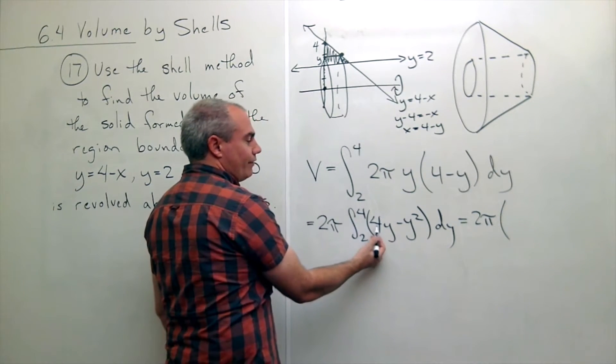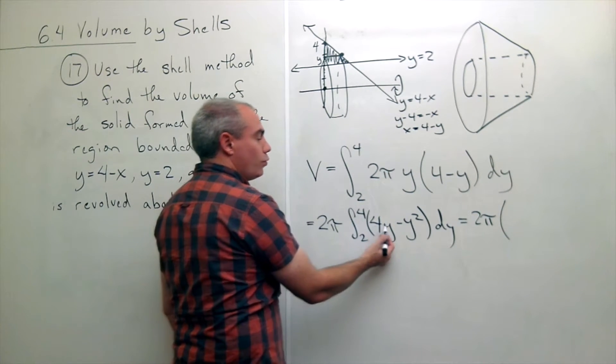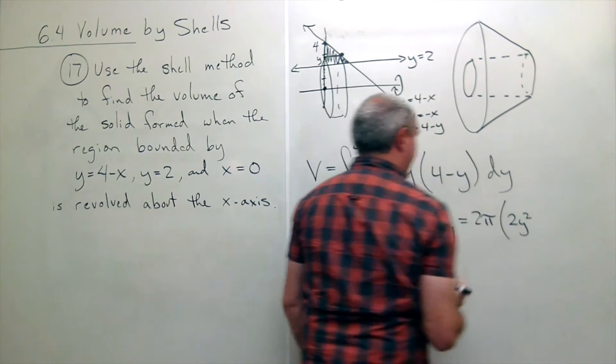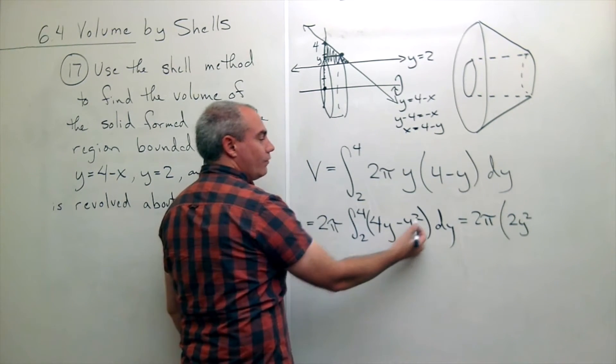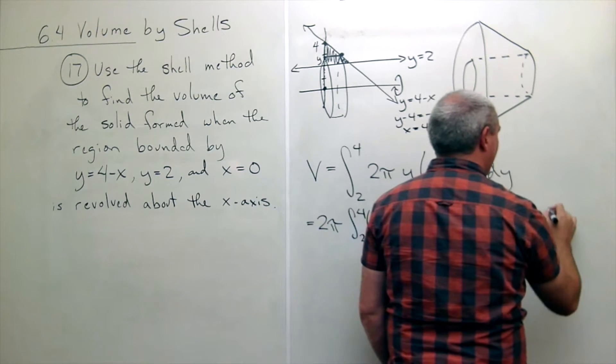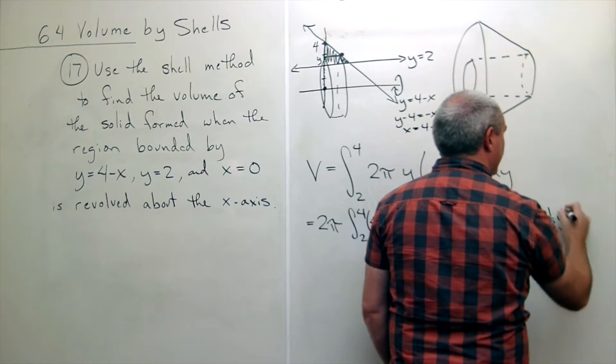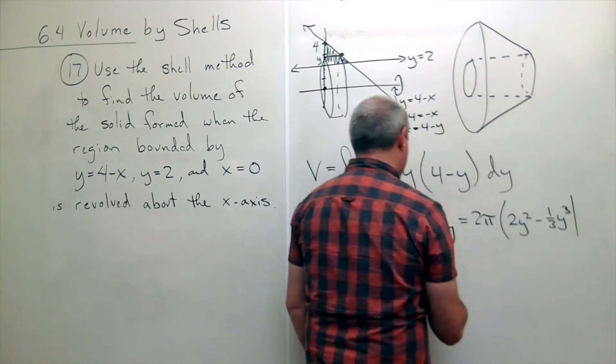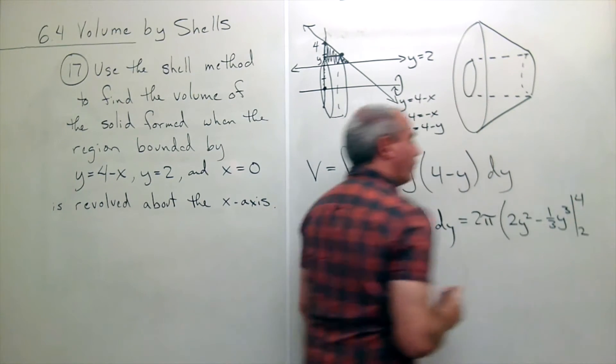The anti-derivative of four y would be two y squared. And the anti-derivative of negative y squared is negative one-third y cubed. All of that's evaluated from two to four.